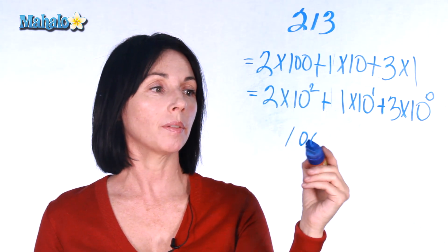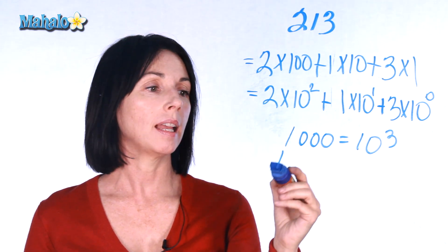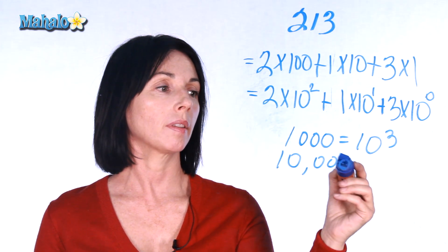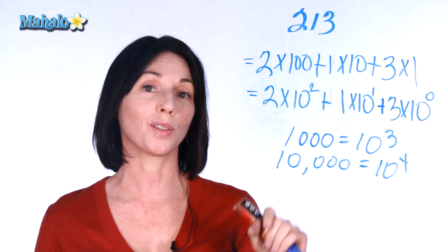If you have a thousand, that means you'll get 10 with an exponent of 3 because we have three zeros over here. If you have 10,000, that means you'll have 10 to the power of 4 because you have four zeros over here.